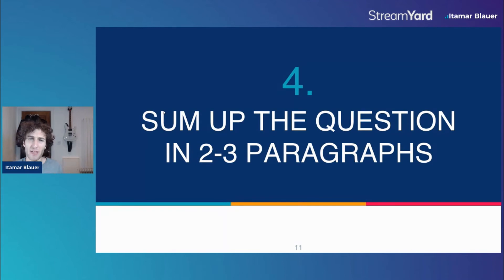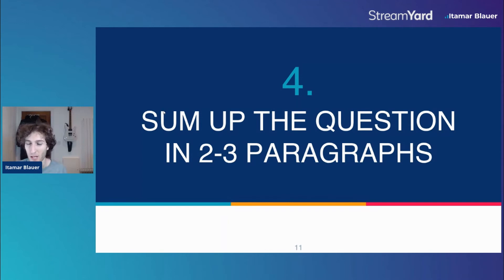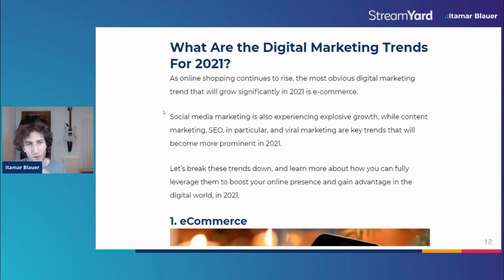The fourth step is about summing up the question in two to three paragraphs. You have to be very explicit about what you include in these paragraphs, because sometimes you don't really want to give away everything you're going to talk about in the post. Because if it shows up in a featured snippet, people might just not click through to your site — they might be satisfied enough with the information already there. So you have to be quite strategic about how you sum up the questions. What I did here is you kind of set the scene when answering the question, because Google a lot of the time will take these paragraphs and display them as the featured snippet.